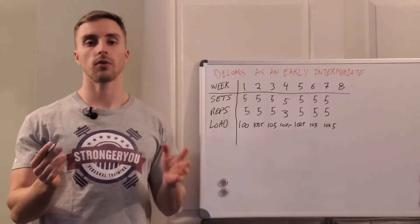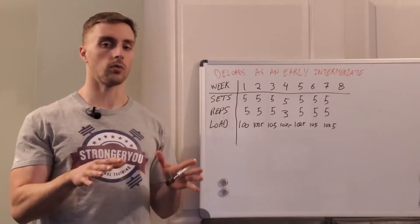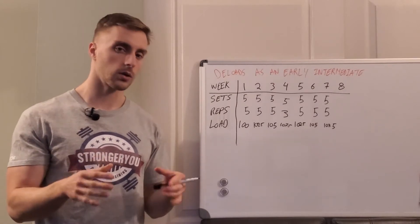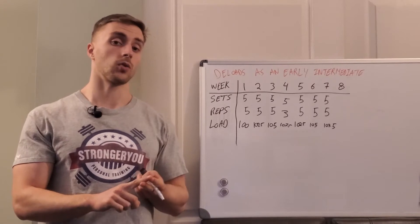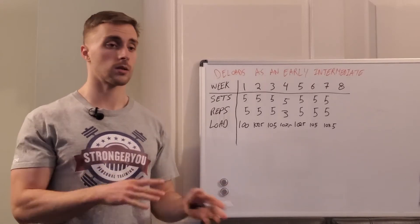So this keeps things really simple from the programming front because you're only really messing with two variables at this point: you're messing with load on the bar and you're talking about your reps. Sets can stay fairly constant because we're multiplying up.